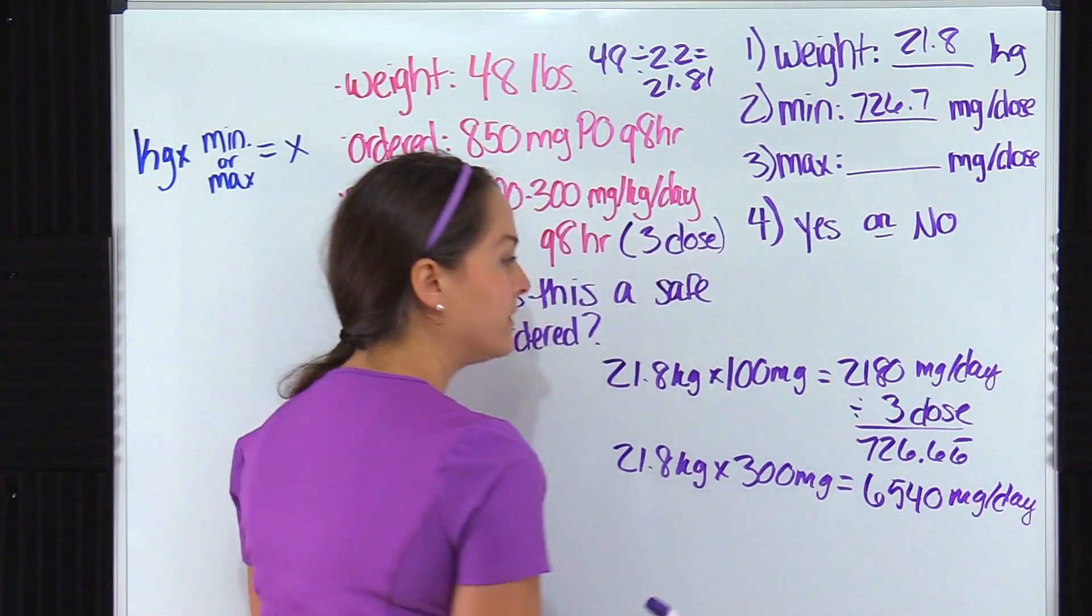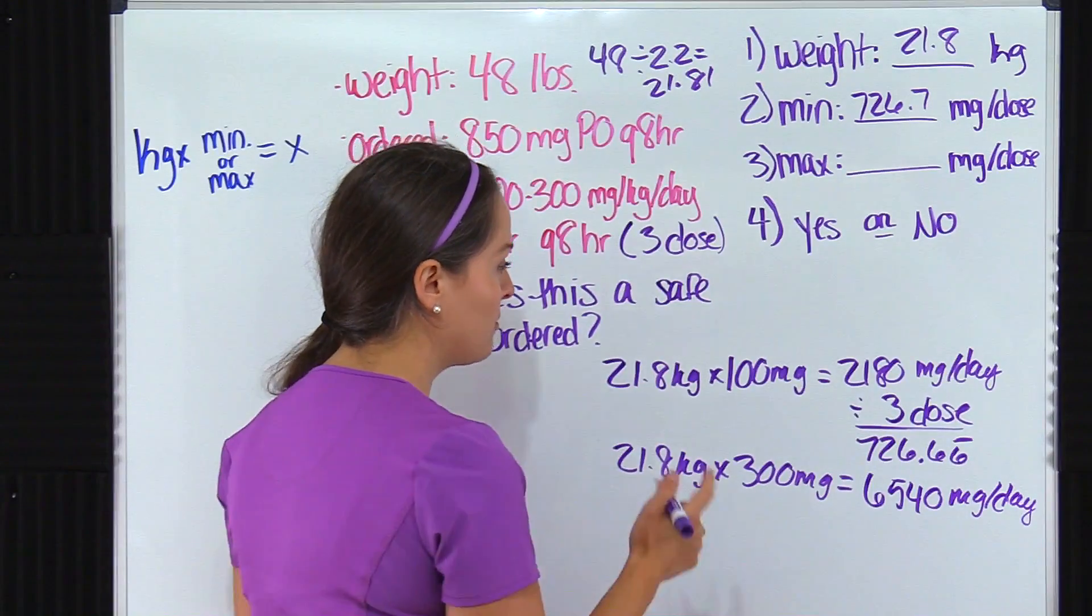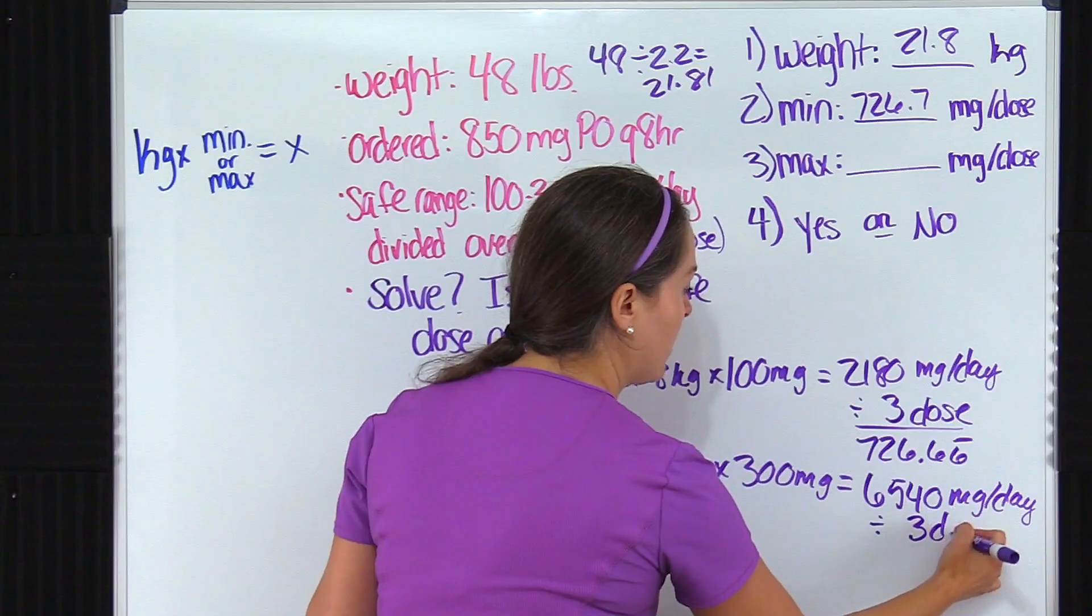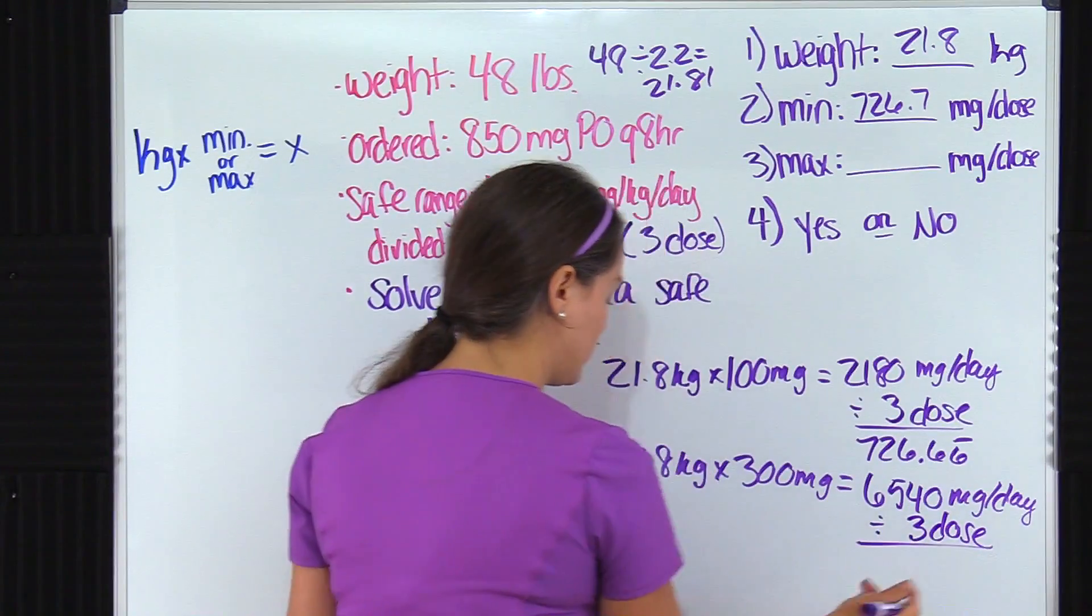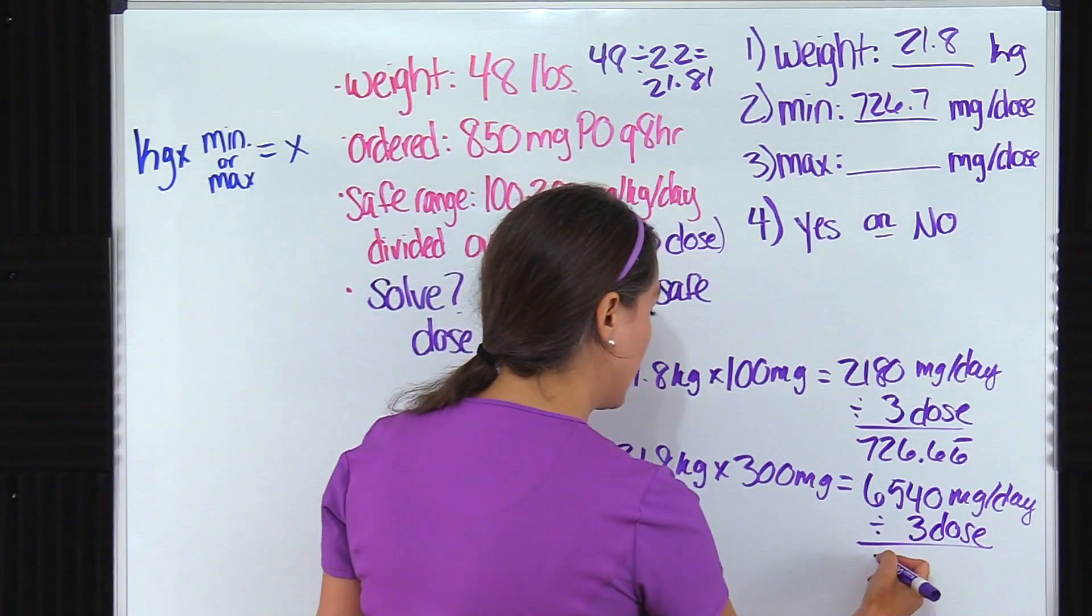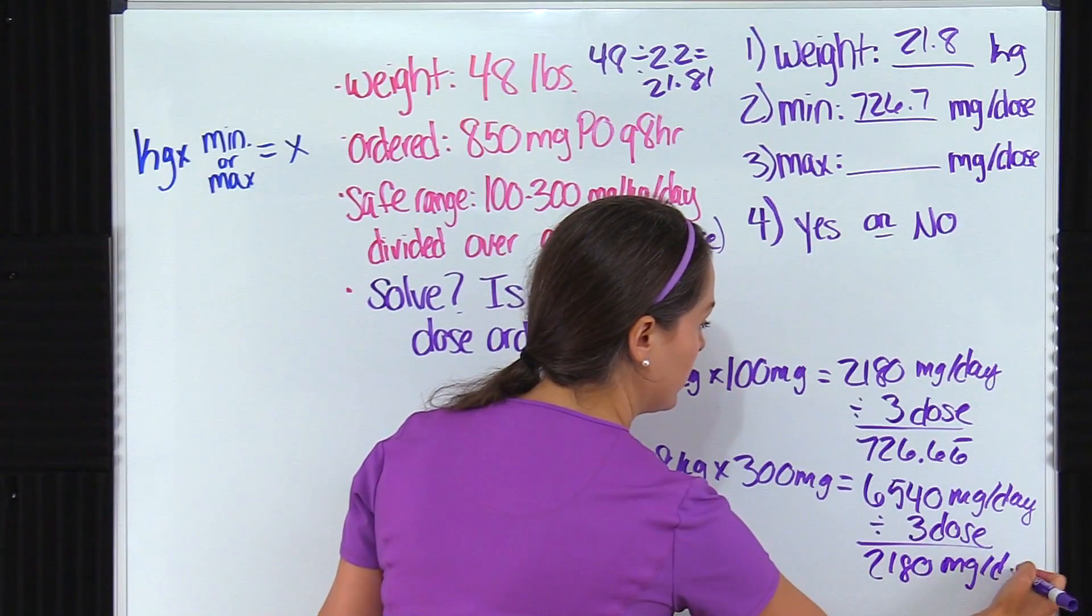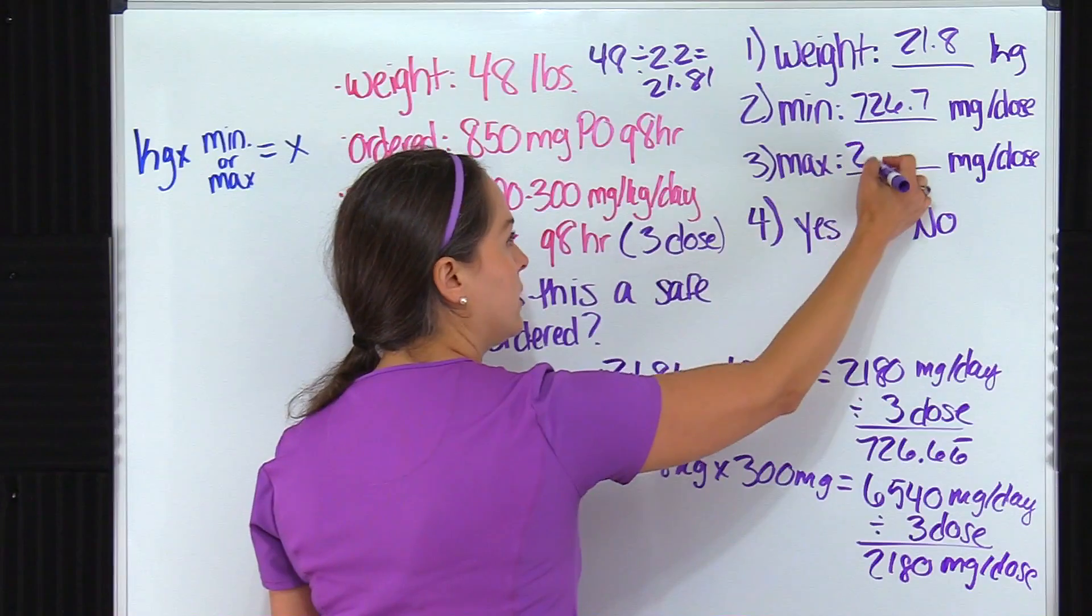I'm not content with being there. I want to be in doses. And we know this is going to be divided out into three doses every eight hours. So we're going to divide that out. And when we do, we get 2,180 milligrams per dose. And we'll write that up here.